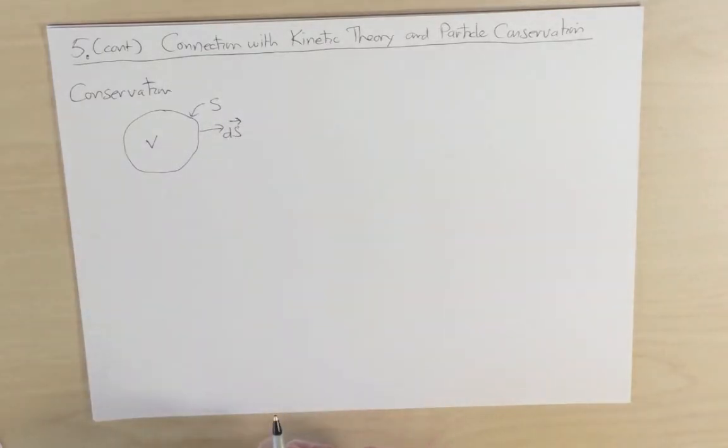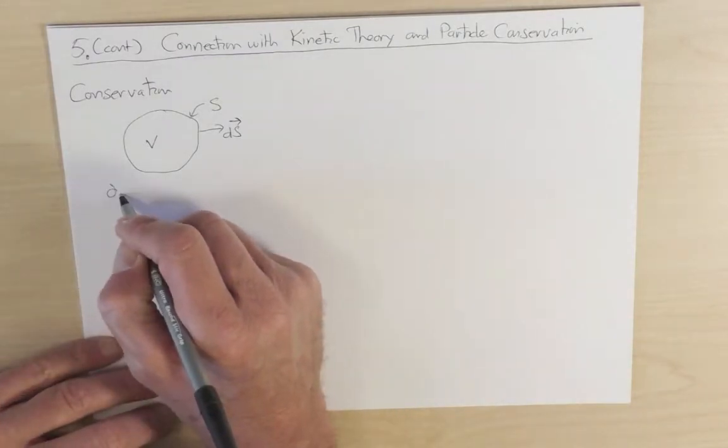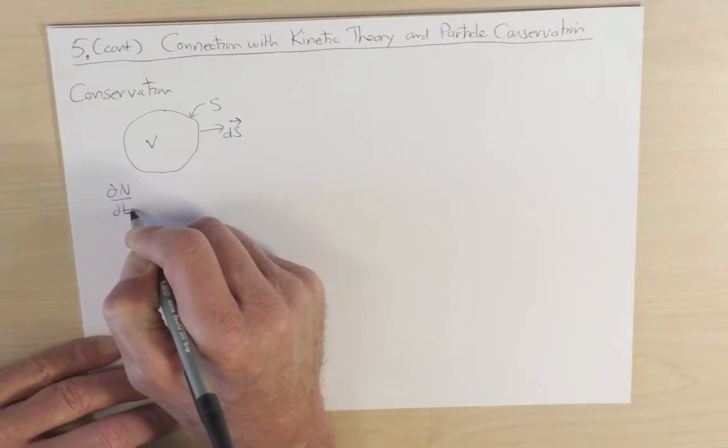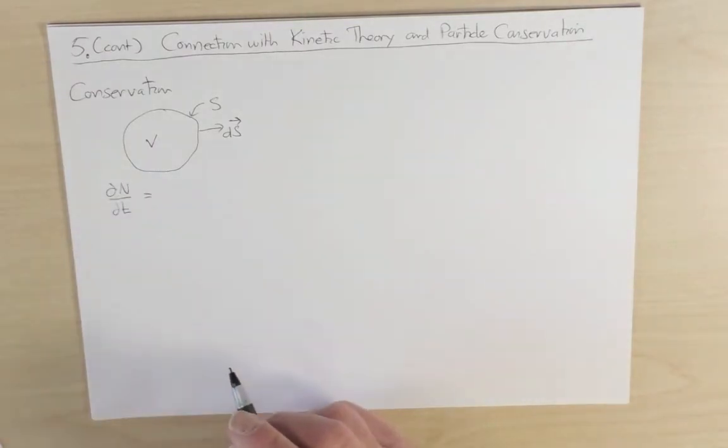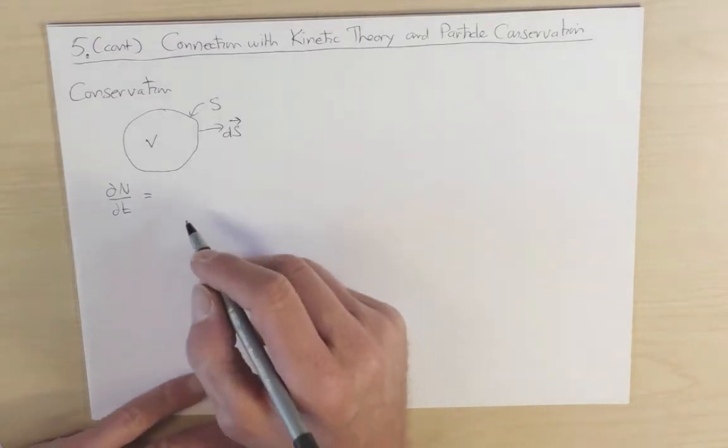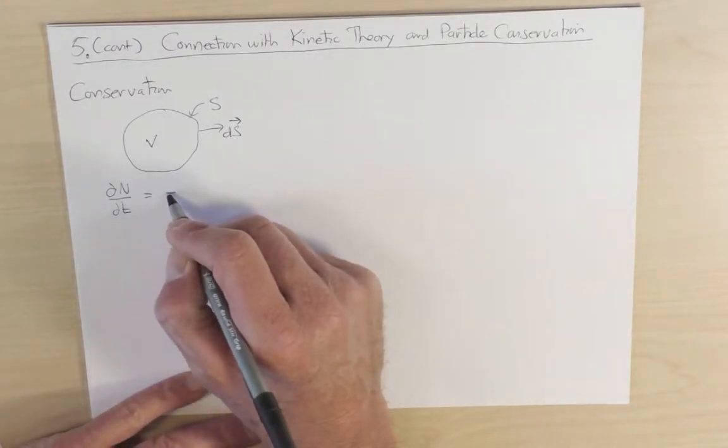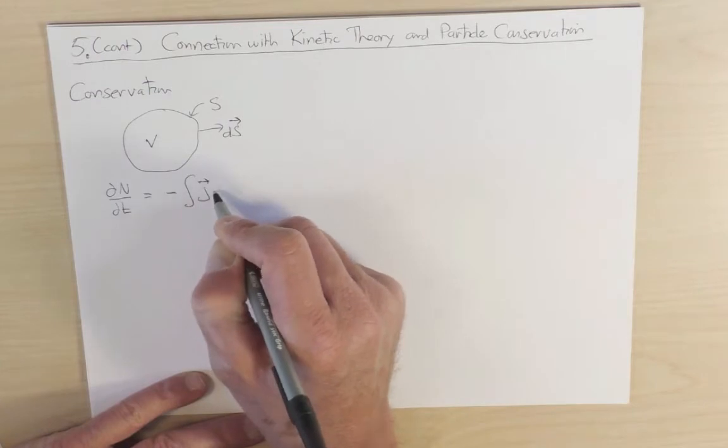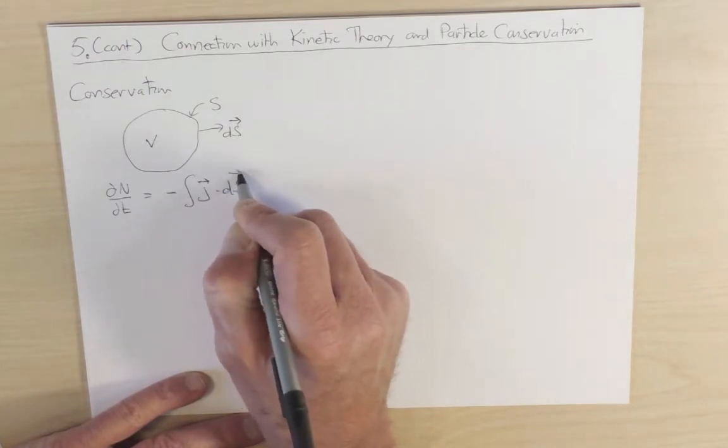The way it can change is because there is a flux of particles passing through the bounding surface. And so the conservation statement is that it's equal to minus j dot ds, where j is the current density.